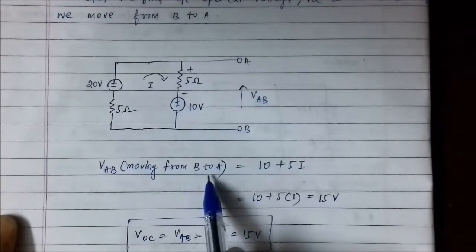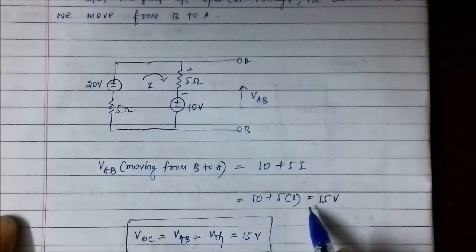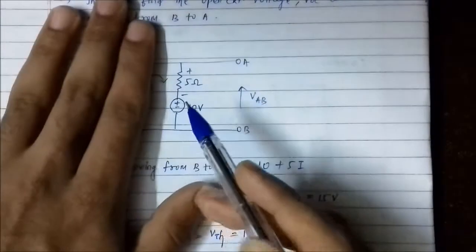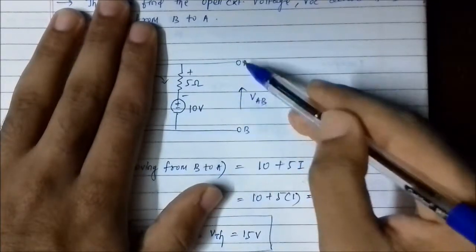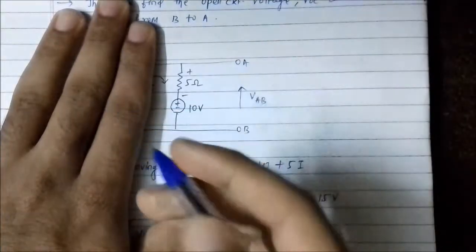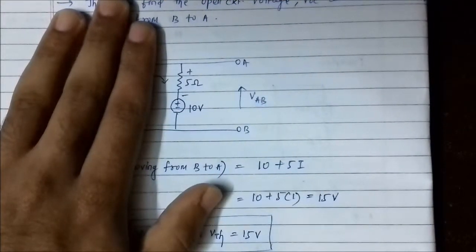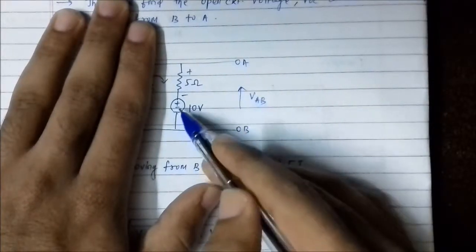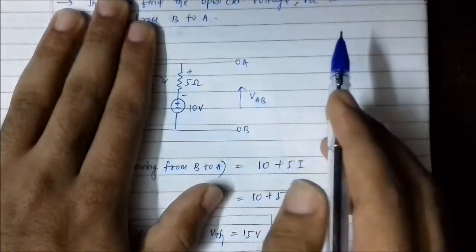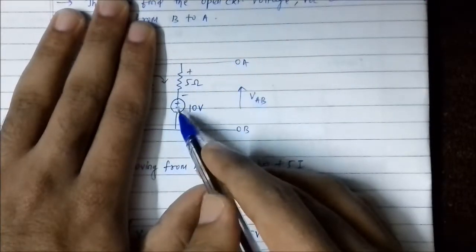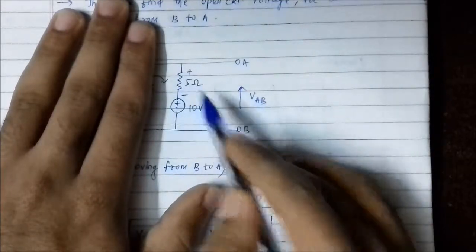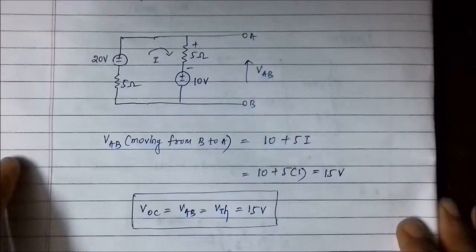Always move from B to A and consider the polarity as assumed when determining the mesh current. Since we moved from negative to positive of the 10-volt source, it is +10 volt. If the polarity had been plus-minus on the other side, we would have considered it negative. Similarly, moving from negative to positive polarity of the resistance gives +5I. So the Thevenin voltage is confirmed as 15 volt.